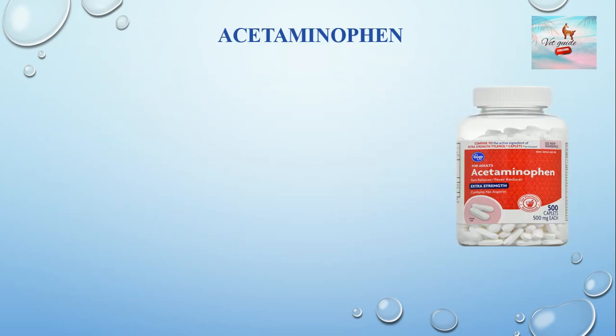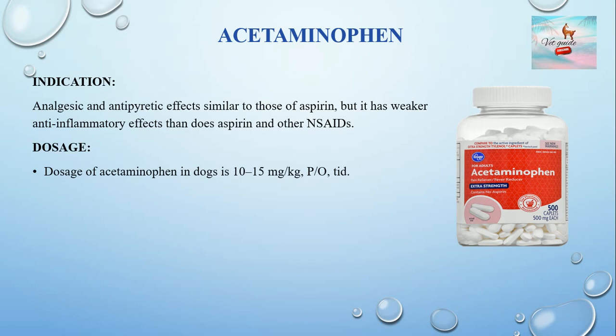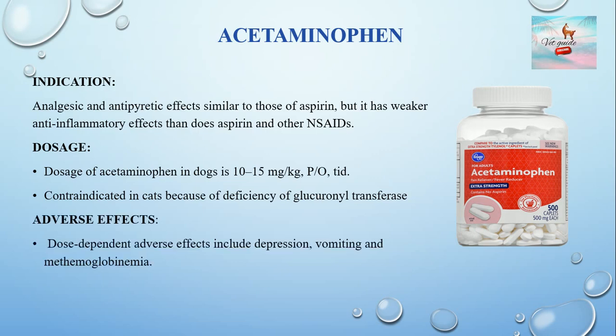Acetaminophen has analgesic and antipyretic effects similar to those of aspirin, but weaker anti-inflammatory effects than aspirin and other NSAIDs. The dose rate in dogs is 10–15 mg/kg orally twice a day. It is contraindicated in cats because of a deficiency of glucuronyl transferase. Dose-dependent adverse effects include depression, vomiting, and methemoglobinemia.